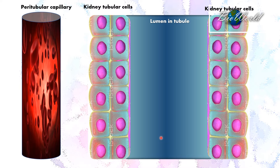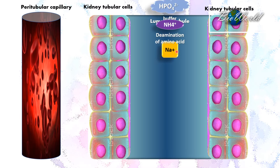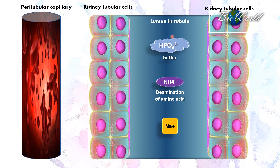During urine formation, the filtrate and the urine will contain a number of metabolites. Here are some examples: hydrogen phosphate ions that can function as a buffer, ammonium ions that are produced through the deamination of excess amino acids, and sodium ions.